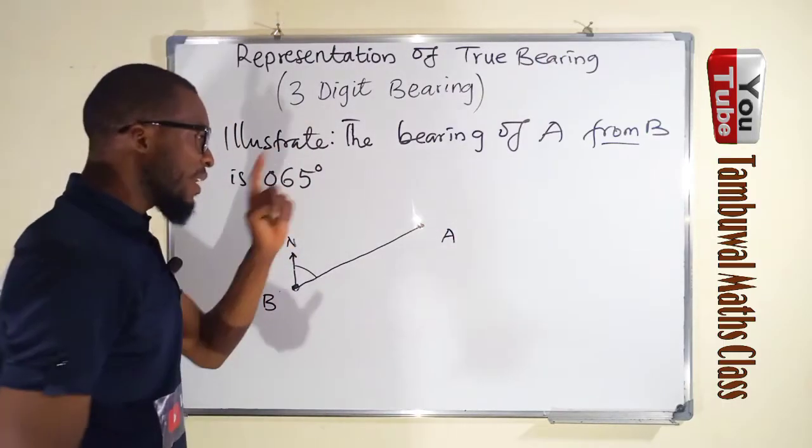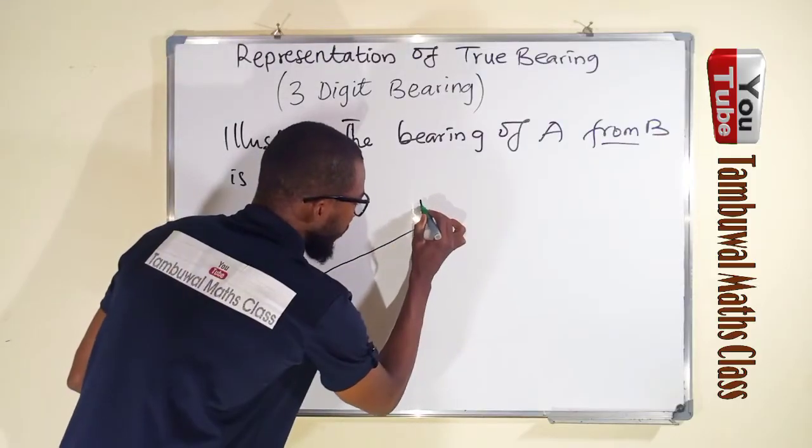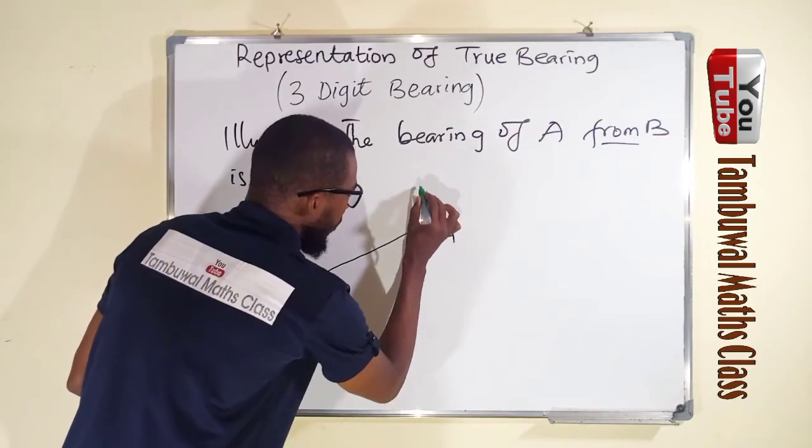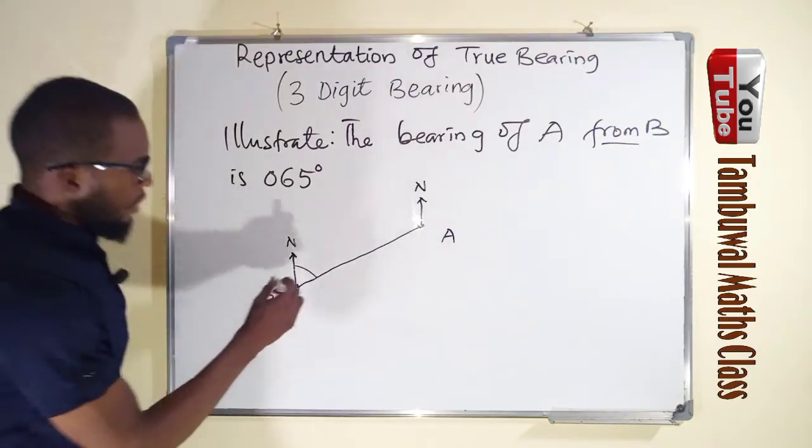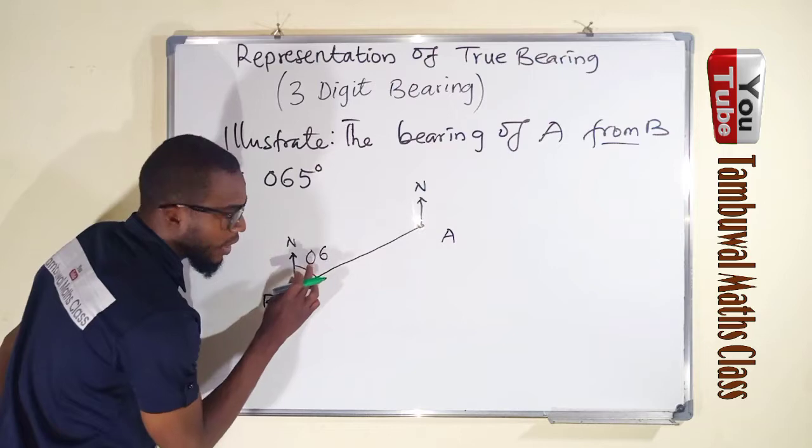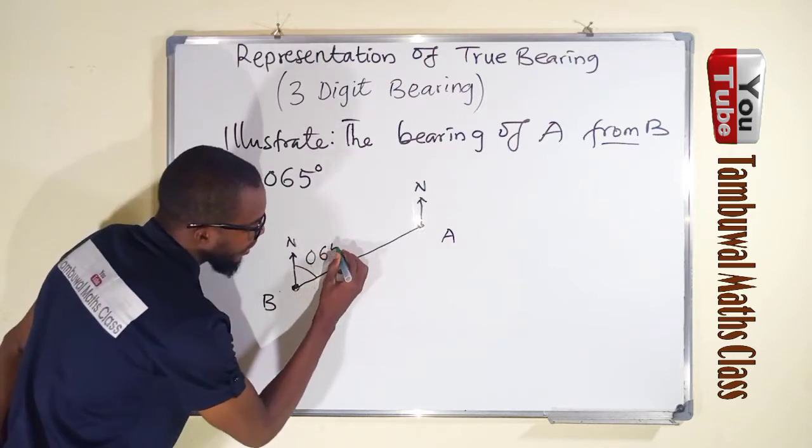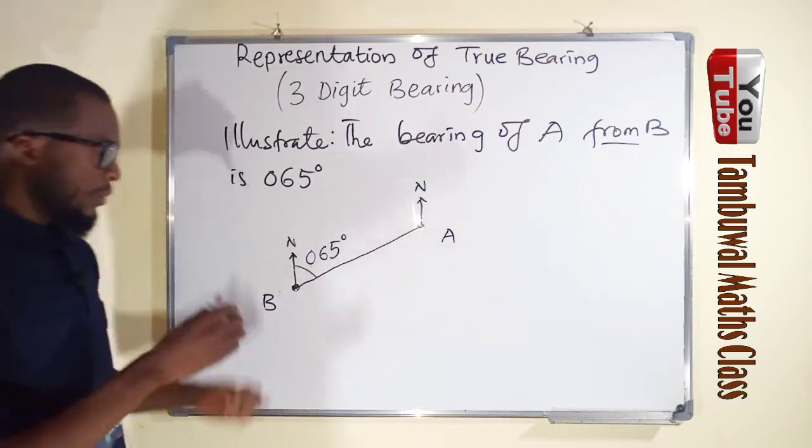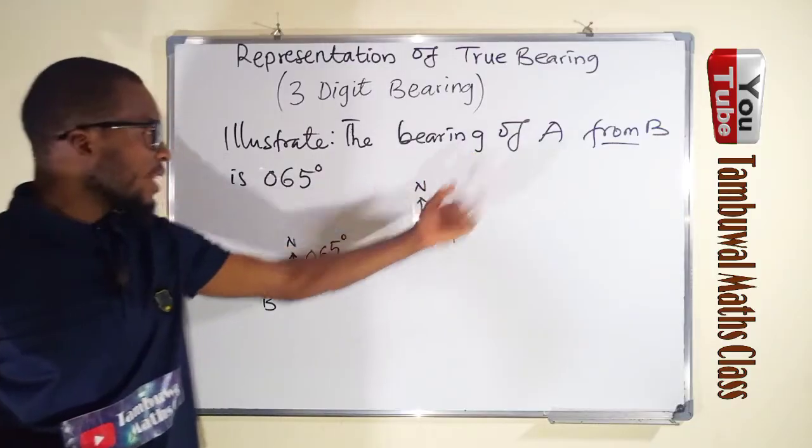You have to say this is our point A. And every point has that north pole, which is upright. Our angle is 065 degrees. You have to add zero behind.